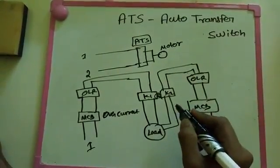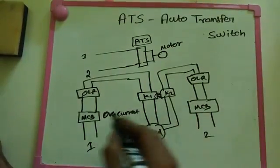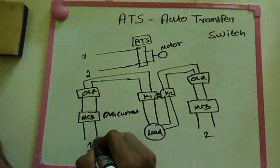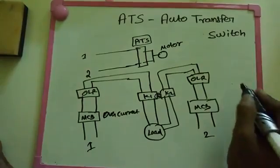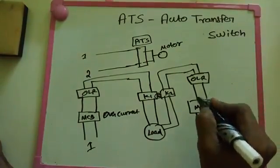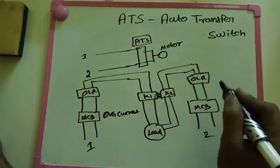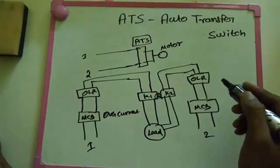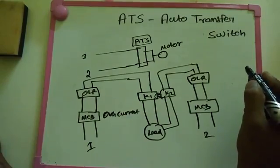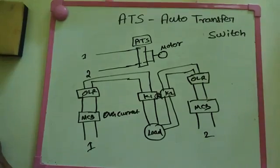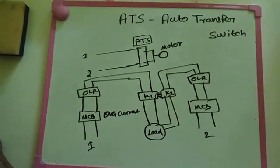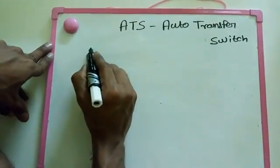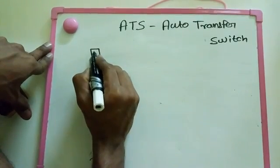Before showing the control diagram, we need to make a common power supply. We have two power supplies. If we make a control diagram and take the power supply from supply one, then if supply one is switched off, the total control goes to shutdown. If we take supply two, then if supply two is switched off, the total control goes to shutdown. So we need to make a common power supply - we make some relays and use them to make a common power supply.